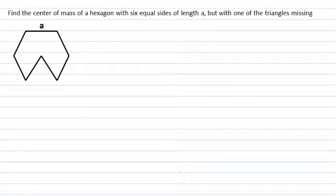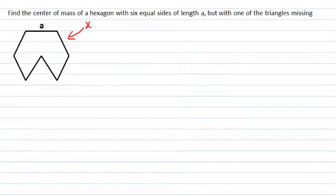In this PhysCast, we're asked to find the center of mass of a hexagon with six equal sides of length a, but where one of the triangles is missing. So this means we want to find the center of mass of this system here, what's drawn.